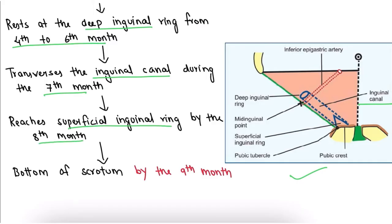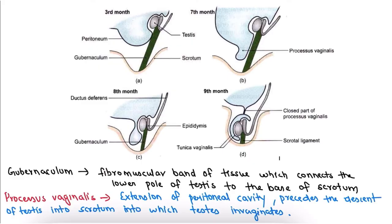After traveling through the inguinal canal, it would reach the superficial inguinal ring by the eighth month of intrauterine life. After that, it would reach the bottom of the scrotum by the ninth month, just before or after birth. So this journey of descent starts during the second month and ends during the ninth month of intrauterine life.